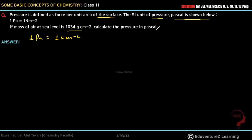अब बोला गया है कि mass of air जो दिया हुआ है 1034 gram per centimeter square. तो mass क्या दिया हुआ है — mass दिया हुआ है 1034 gram.